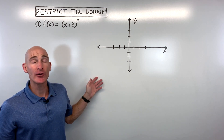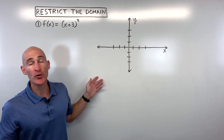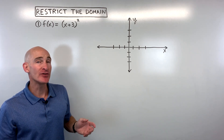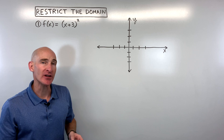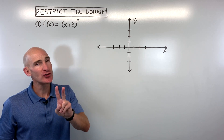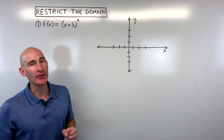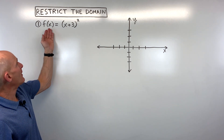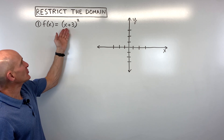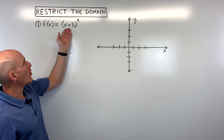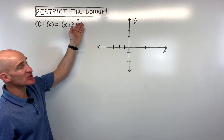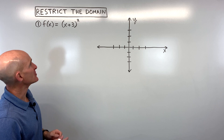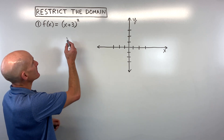In this video, you're going to learn how to restrict the domain so that the inverse is a function. We're going to go through two examples together. So let's start with this first example. If we have f of x equals the quantity x plus 3 squared, let's just graph this to get a sense of what this graph looks like.